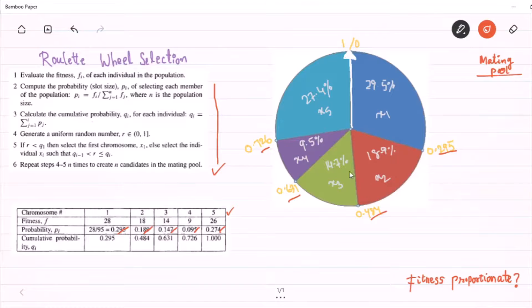when the wheel stops, if the pointer is at 0.8, then we can say that x5 is selected into the mating pool.